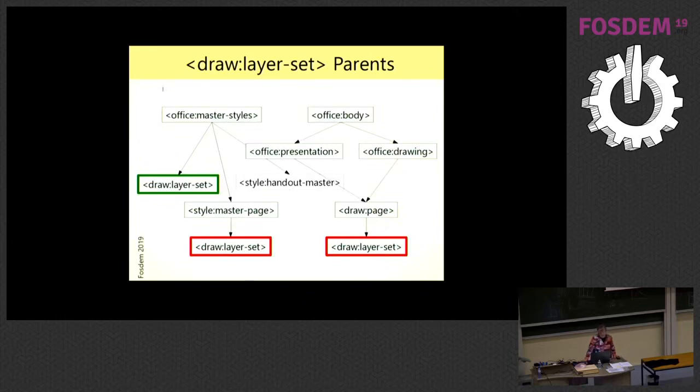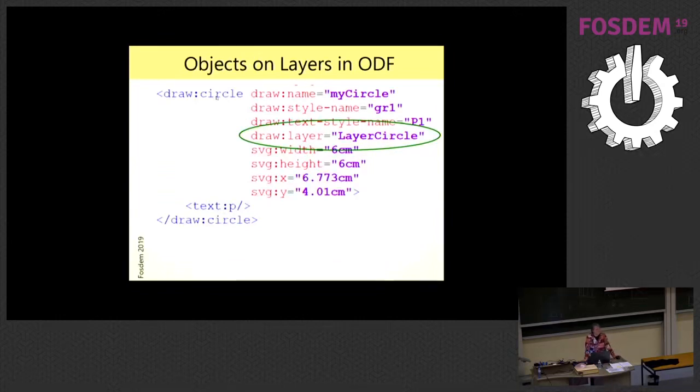It remains a question how the connection between layer set and objects are realized. And that is very simple. The object has an attribute layer where it references the layer with its name. An object can only have one layer and more important is the layer does not know which objects are assigned to him.